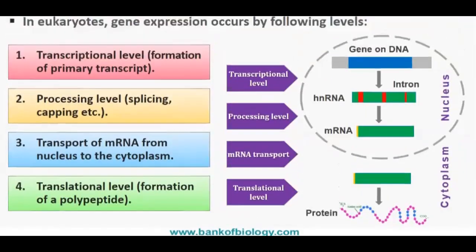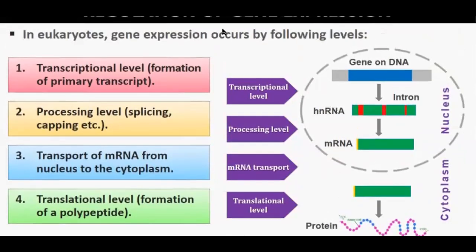Students, in eukaryotes gene expression occurs by the following levels. The gene expression has the following levels: first of all, the transcriptional level — that is the formation of the primary transcript. Then the processing level, where the transcriptional units are processed, meaning exons and introns are sorted and introns are removed. Then there is the transport of mRNA from nucleus to cytoplasm.